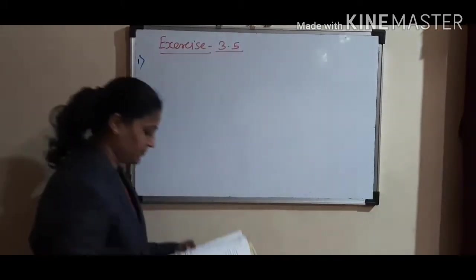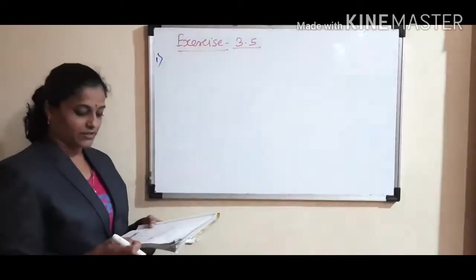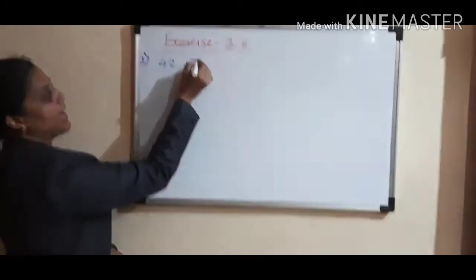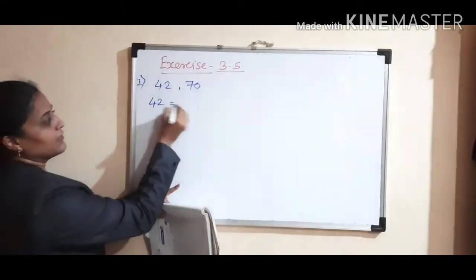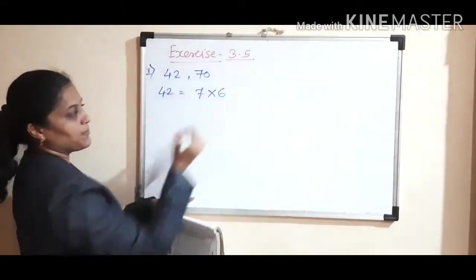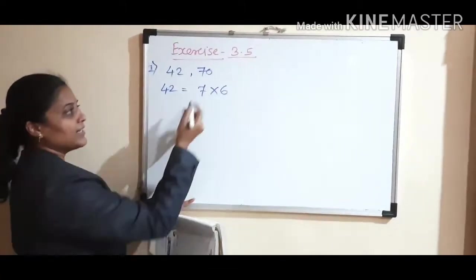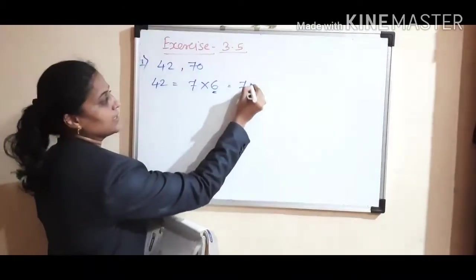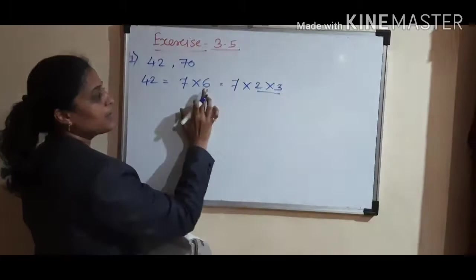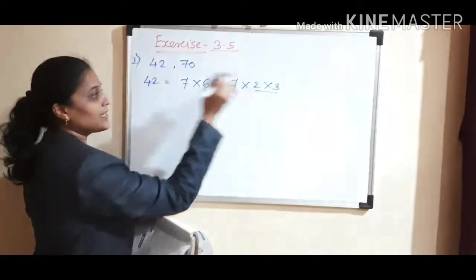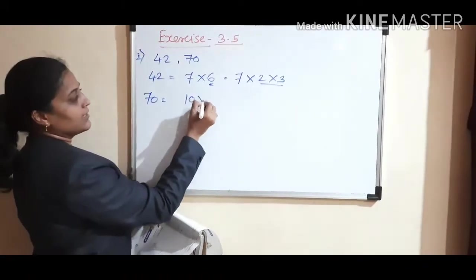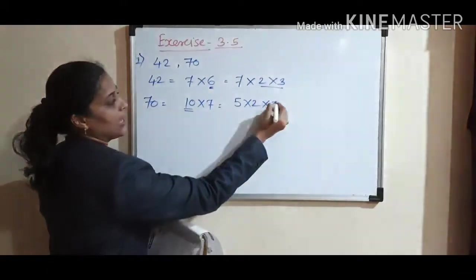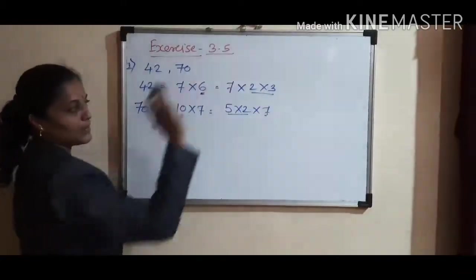We want to find the LCM. First, we take 42 and 70. 42 equals 7 times 6. We divide 6 into 2 times 3. Now 70 equals 10 times 7. This 10 we divide into 5 times 2, and the 7 is there. We got all the prime numbers.